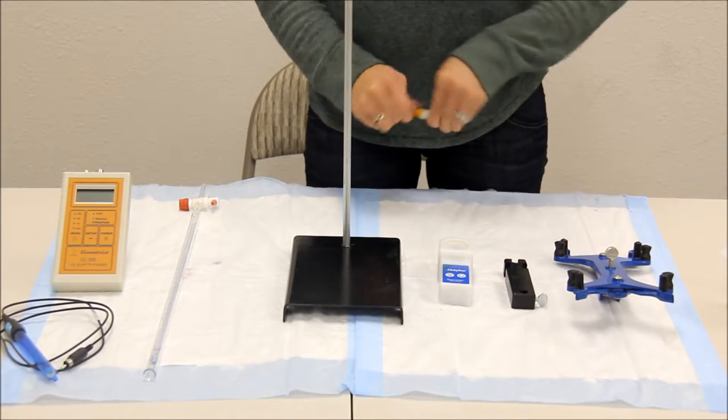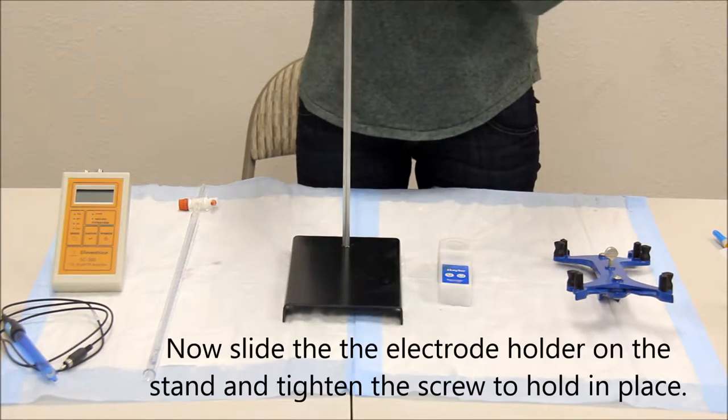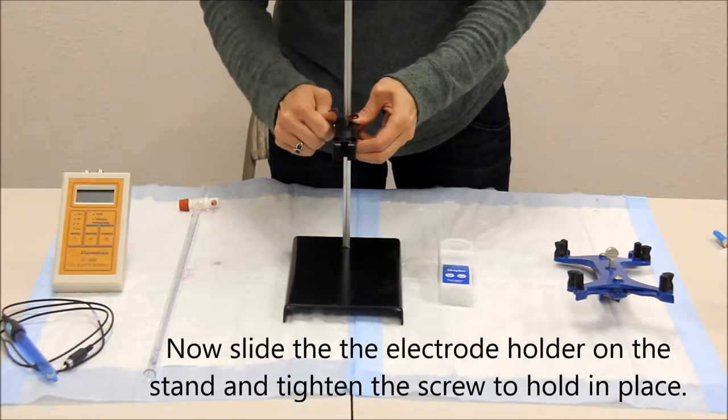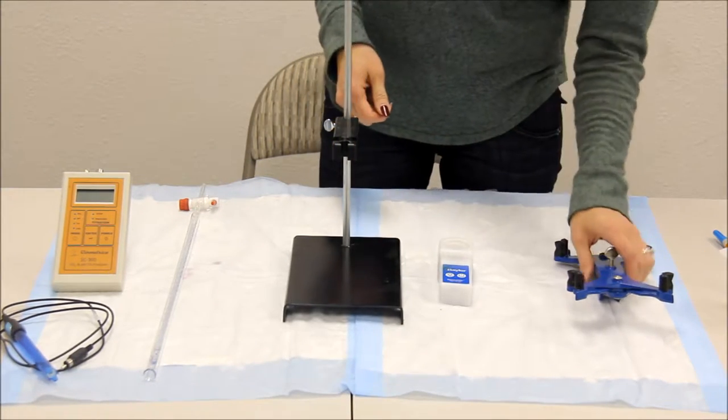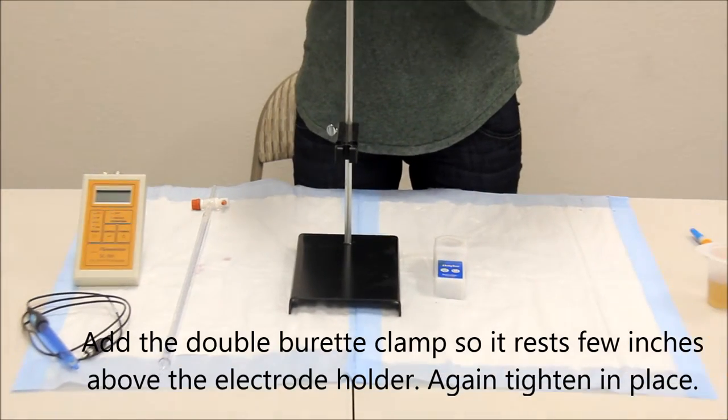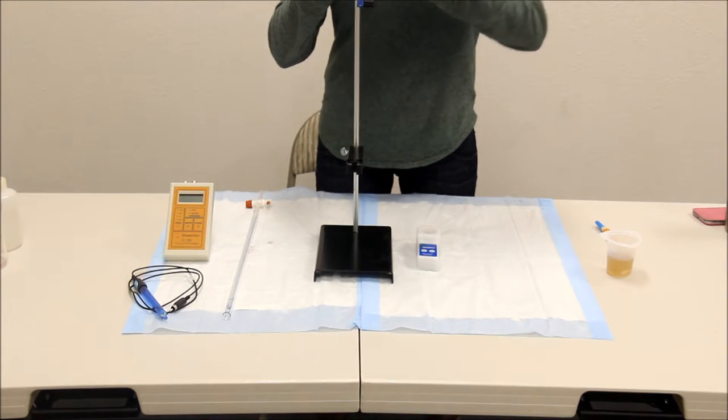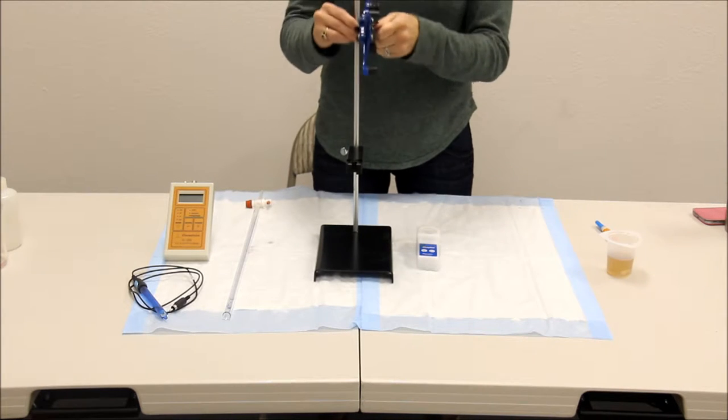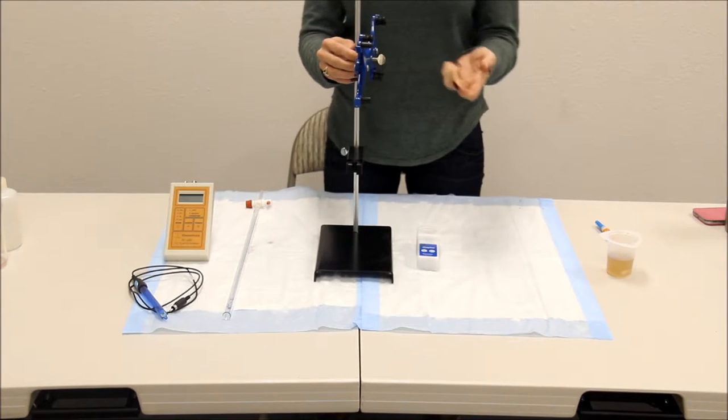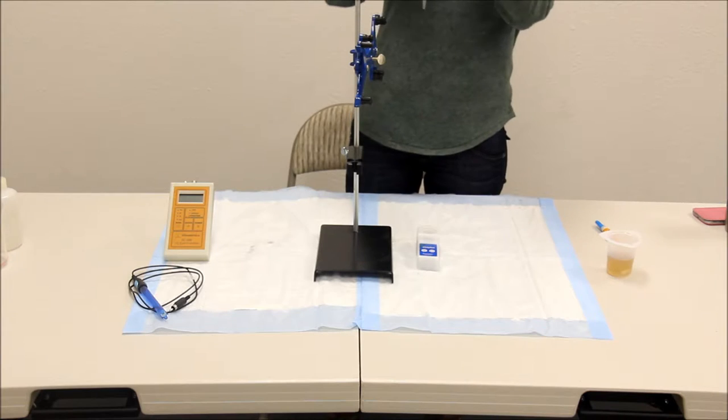You will now place the electrode holder and tighten to clamp down. You can now add your double burette clamp and slide in your burette.